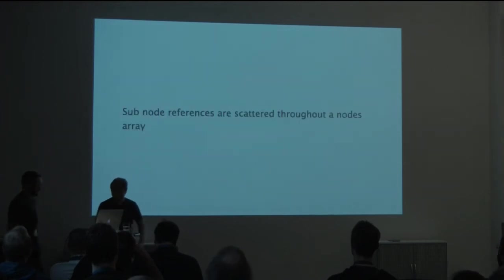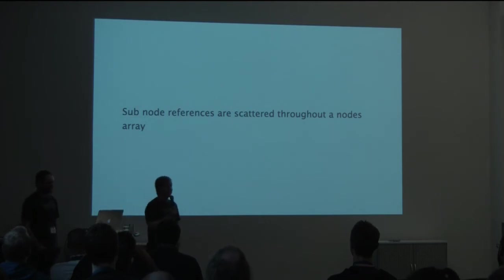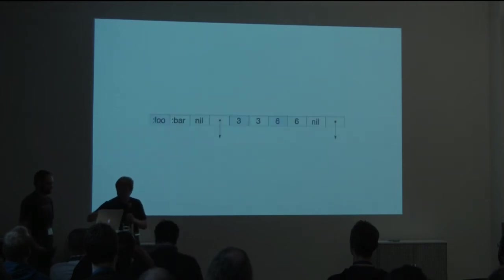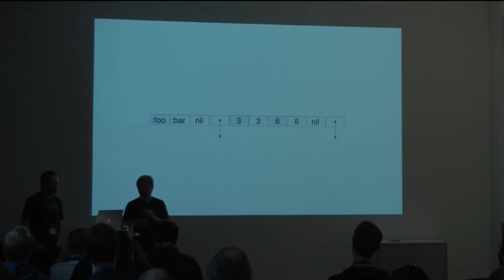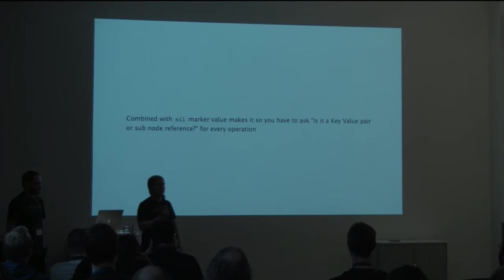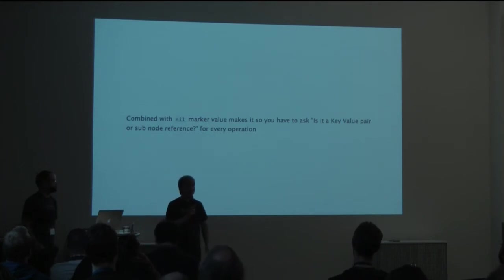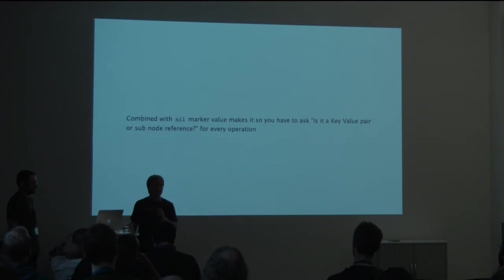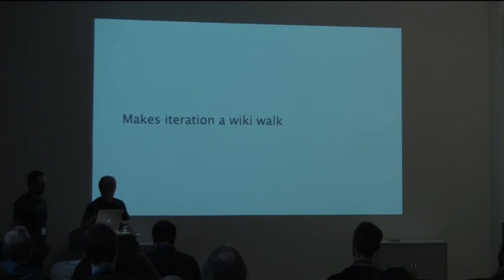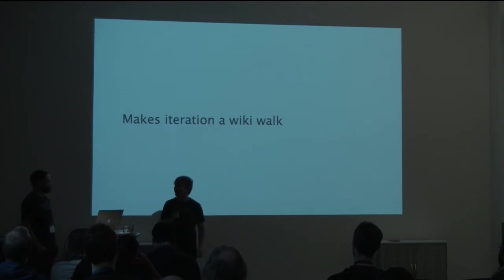What's the second problem? The second problem is that sub-node references we don't know where they're located so they're scattered all throughout the array where you can see right here that there's key-value, sub-node reference, key-value, key-value, sub-node reference. And this means that when we're doing any sort of traversal that we have to always have a conditional check that we always ask whether we're actually a key-value or are you sub-node reference whenever we're doing any sort of operation there. This just adds a lot of mental overhead and complexity to our code. And this makes iteration a wiki walk.